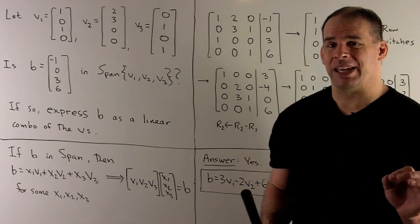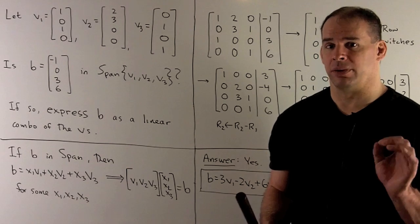If so, write b as a linear combination of v1, v2, and v3.